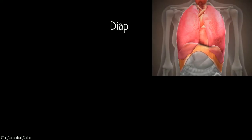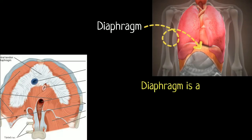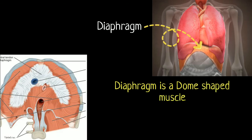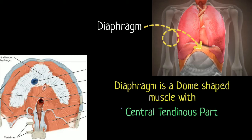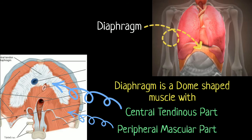The diaphragm separates the thoracic and the abdominal cavity. It is a dome-shaped muscle with a central tendinous part and a muscular part in the periphery.